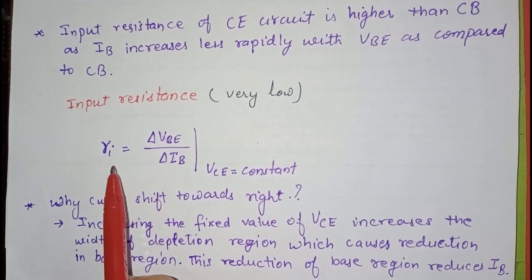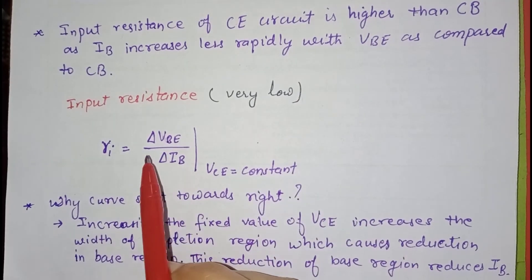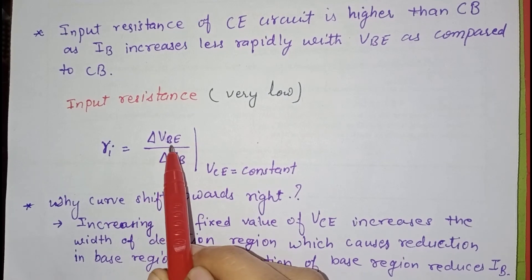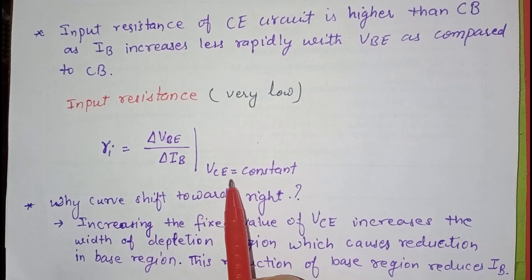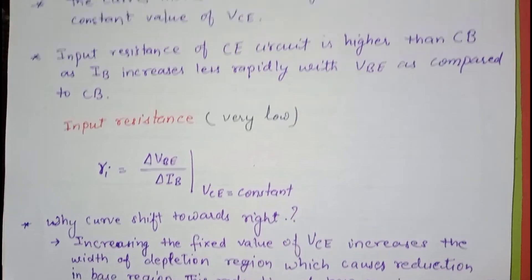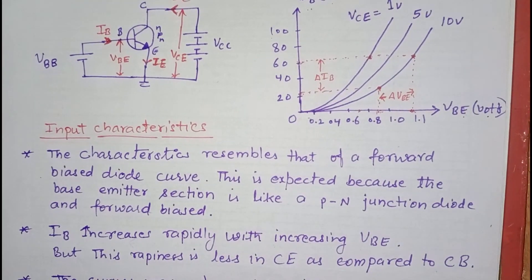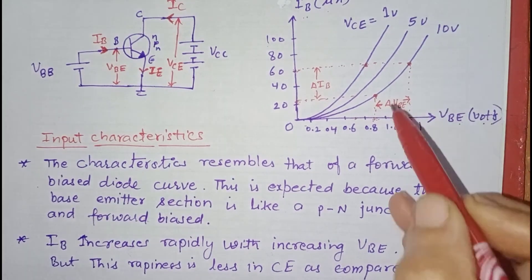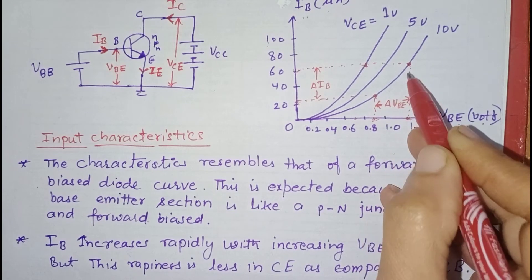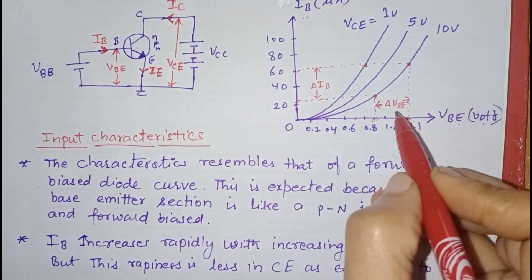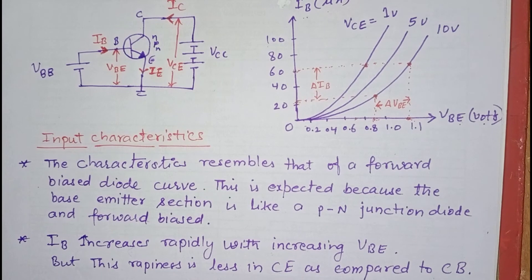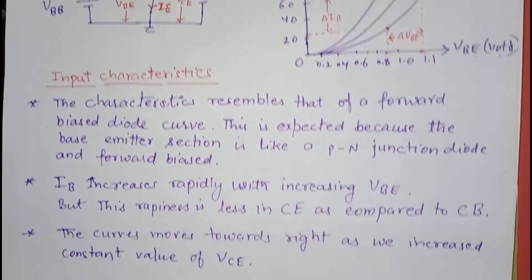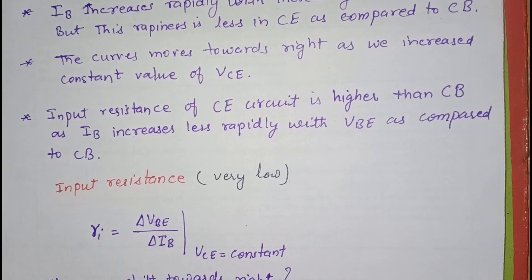We can find the AC input resistance of the common emitter configuration. It is given by the change in VBE divided by the change in IB at a constant value of VCE. This is found by taking two points on one of the curves, drawing perpendiculars to both axes, and computing the ratio of the differences. In the common emitter configuration the input resistance is relatively low, but slightly higher than in the common base configuration.